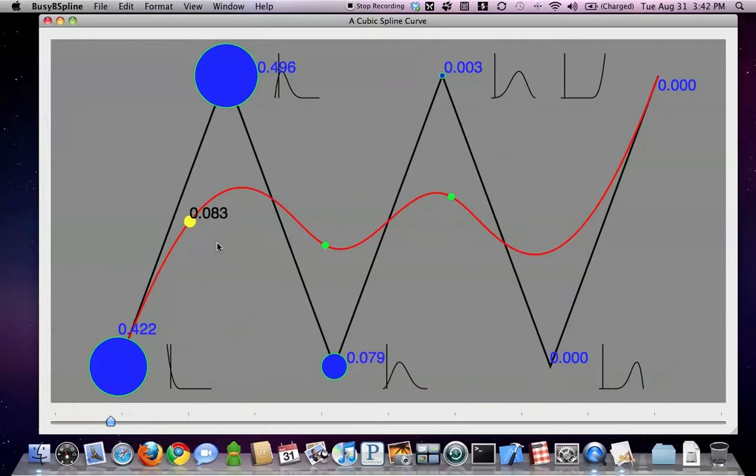Another way we can experiment with the properties of splines is by moving one of the control points. Notice if we keep the parameter fixed, like in this case 0.083.